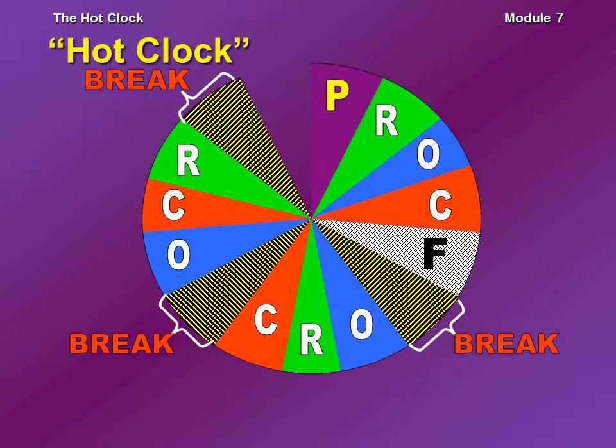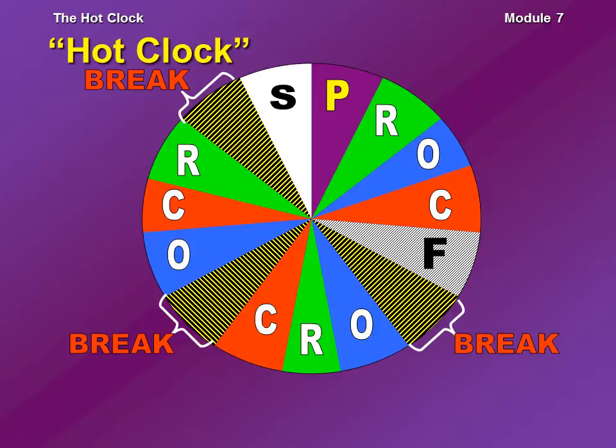This particular pie chart, this particular wheel, this particular hot clock, only has three breaks. It doesn't have to be that way. You can do a bunch of little breaks where each break is only one or two minutes long. Or in some cases, if you're feeling ambitious, make every hour have only one big break — one huge break. In any case, this one has three.